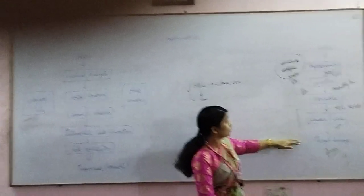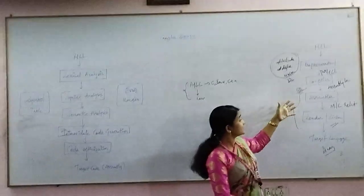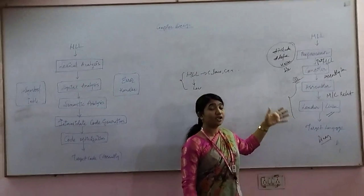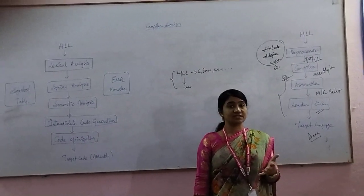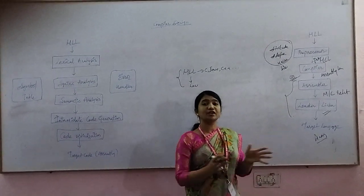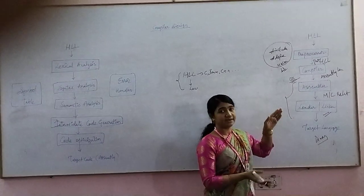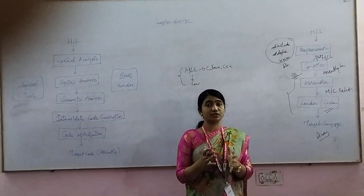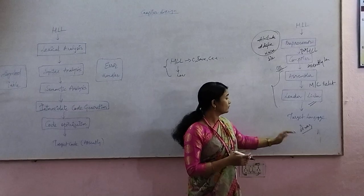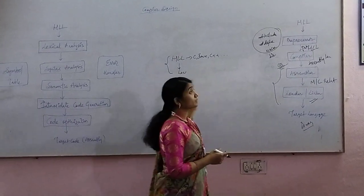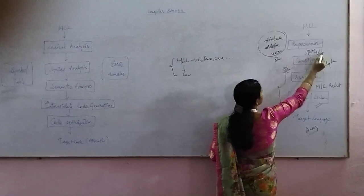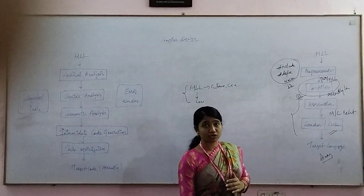These are the different software modules which convert your high level language to pure binary language, which is nothing but pure machine language or low level language. These are the modules theoretically, but in practice, whenever we use Turbo C, GCC, or Code Blocks compiler, we cannot find these as separate modules. They are all combined, so whenever you execute a file, it directly takes your Java or C file and converts into binary.